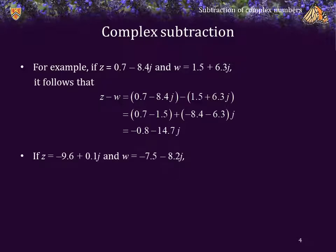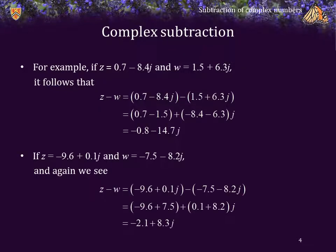As another example, if z equals negative 9.6 plus 0.1j and w equals negative 7.5 minus 8.2j, then z minus w is equal to negative 2.1 plus 8.3j.